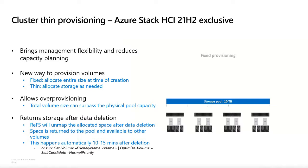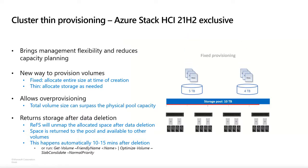Thin provisioning is basically a new way for you to provision your volumes. Traditionally, all we've had is fixed provisioning. On the right-hand side in the graphic, you can see that if I'm creating two volumes — one at five terabytes and one at four terabytes — and I only have ten terabytes in my entire storage pool, nine terabytes of space will be completely taken up even though I don't have any files in the volume. With fixed provisioning, as you add files, the amount of space used doesn't really change because space is pre-allocated at the time of creation.